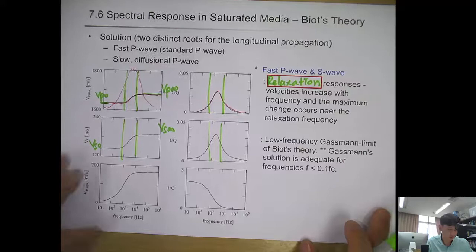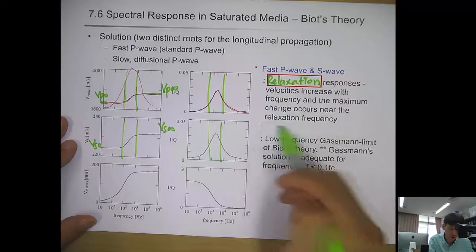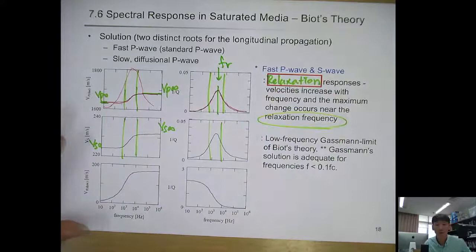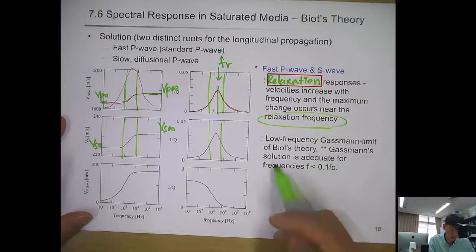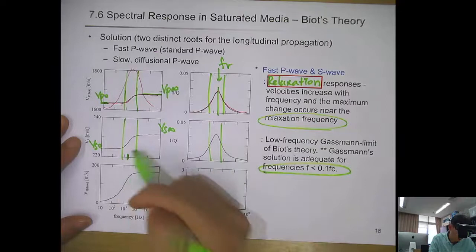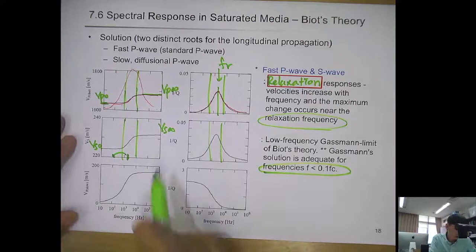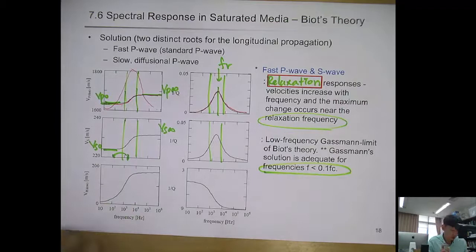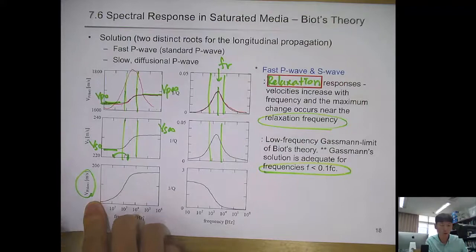Velocity increases with frequency, and maximum change occurs near the relaxation frequency F_R. The Gassmann low-frequency limit of Biot theory is adequate when frequency is less than 10% of F_R. There is also a slow P wave (second P wave mode) in addition to the fast P wave. The slow P wave attenuates very quickly — its attenuation value can be about 100 times bigger than the fast P wave damping — and its velocity increases with frequency from below 10 m/s, making it very difficult to observe.